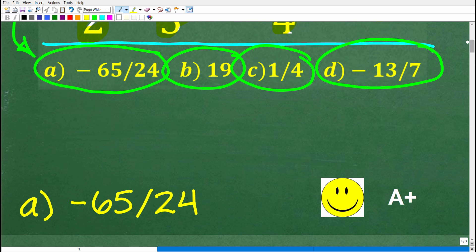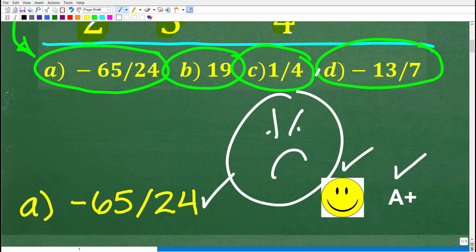All right, so let's take a look at the correct solution. The right answer here is A, negative 65 over 24. All right, now if you got this right, well, you definitely get a happy face and an A plus. And if you're like, Mr. U2 Math Man, I thought this problem was easy. What's going on? I got the wrong answer.